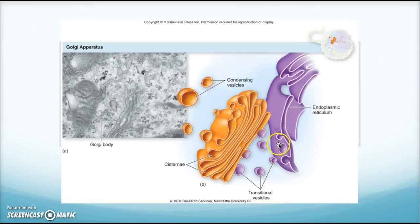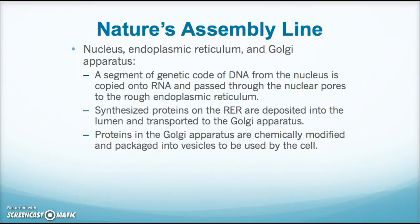The picture shows endoplasmic reticulum with transitional vesicles carrying protein into the cisternae of the Golgi apparatus, where they get processed — maybe modified by adding a sugar or fat — then put into a condensing vesicle sent elsewhere in the cell or outside. It's kind of an assembly line: DNA in the nucleus is copied into RNA, which goes out through the nuclear pores to the rough ER, proteins are synthesized by ribosomes there, deposited inside the ER, transported to the Golgi, chemically modified, and put into vesicles to be used inside or outside the cell.